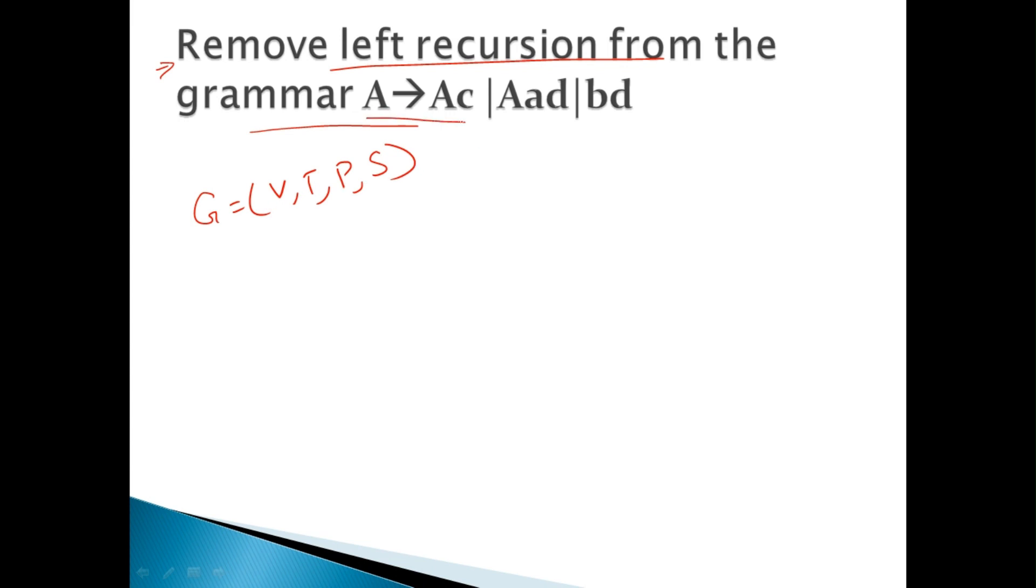The production rules are these functions. And the variable is A. The terminal set is consisting of A, B, C and D. And A is the start variable.